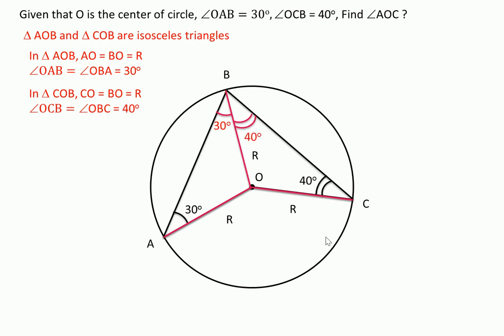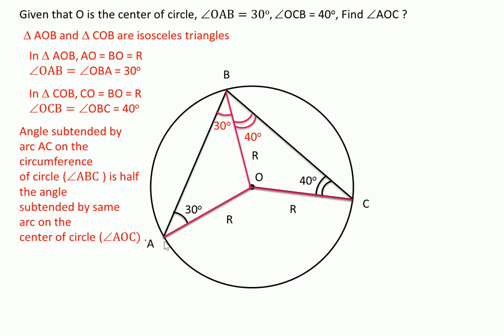Now we know that the angle subtended by an arc on the circumference of circle is half of the angle subtended by the same arc at the center of circle.